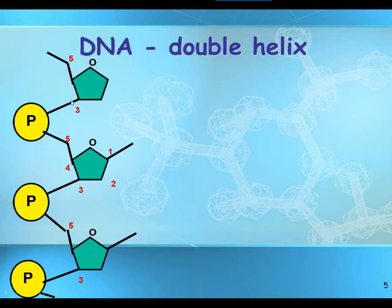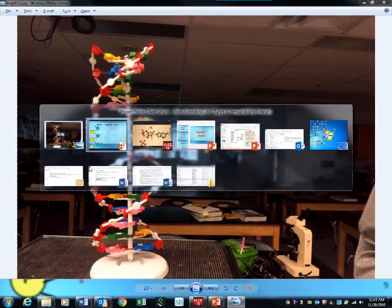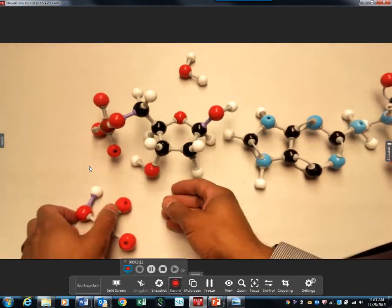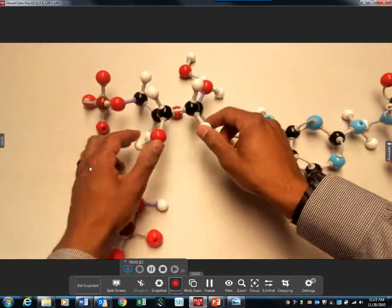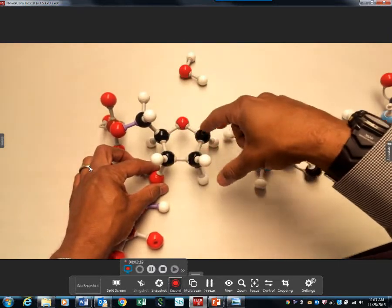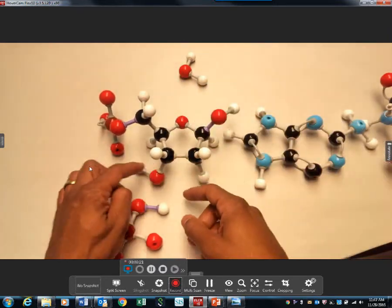And then the phosphate down here - well, let's just look. I'll show this on the model. This is the third carbon from the deoxyribose. It's going to attach to a phosphate, which is going to in turn attach to the fifth carbon of the one underneath it. And that's what I'm going to show here. So here's the five carbons: one, two, three, four, five. Here's three.